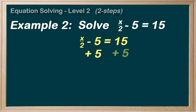So add 5 to both sides and draw our line. On the left, x over 2 minus 5 plus 5 leaves us with just the x over 2. And on the right, 15 plus 5 leaves us with 20. So, x over 2 equals 20.